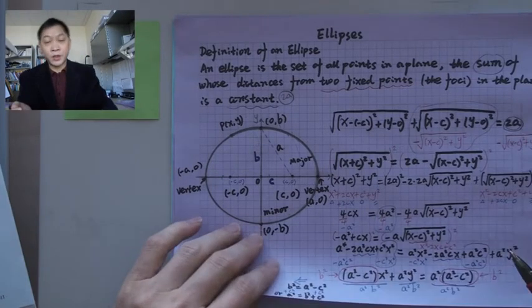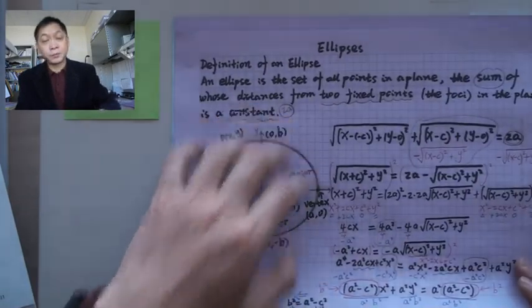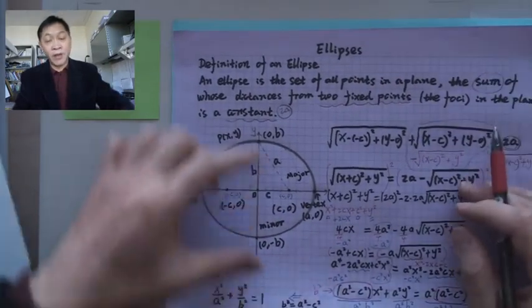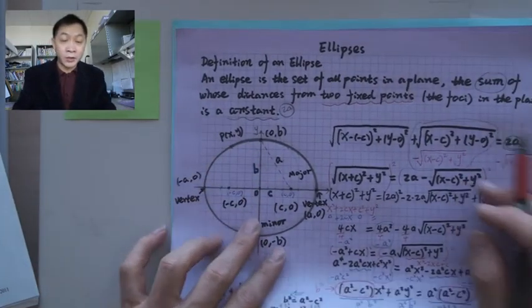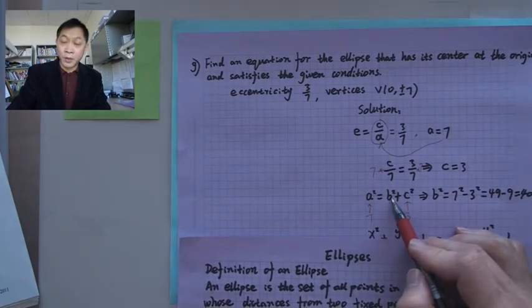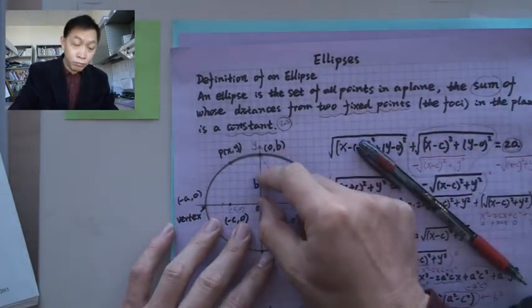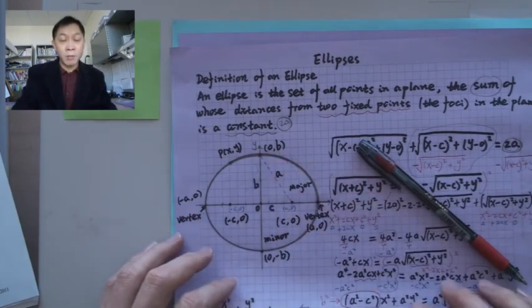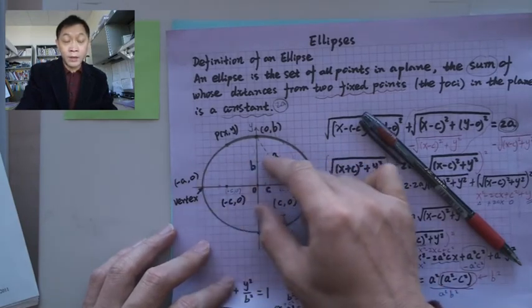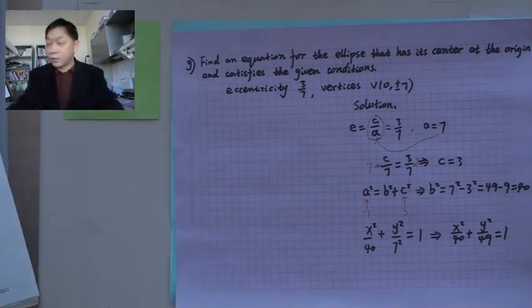If eccentricity is small, then the ellipse is going to be like a circle. If eccentricity is bigger, the picture will be flatter — because c over a is bigger, c is bigger, and from the equation b has to be small. So if the minor axis is shorter, the ellipse is flatter. Okay, I'll stop here for these three examples. I'll see you next time.